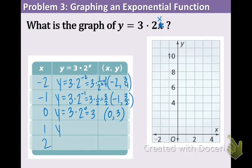Plugging in 1, y equals 3 times 2 to the 1st. Which is 3 times 2, and that's 6. 1 comma 6. And lastly, y equals 3 times 2 to the 2nd. Which equals 3 times 4. And that is 12. 2 comma 12.